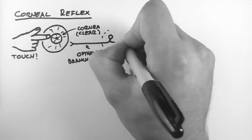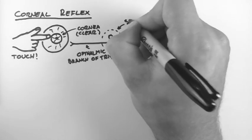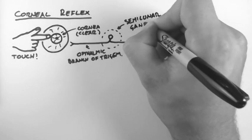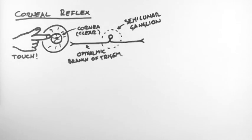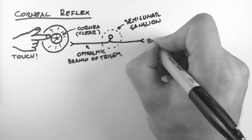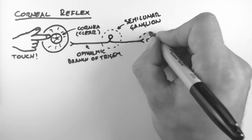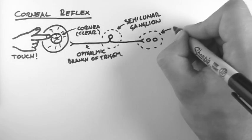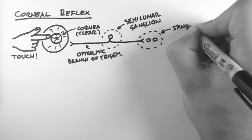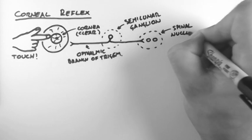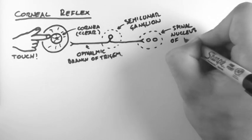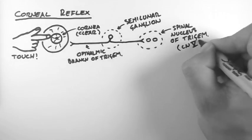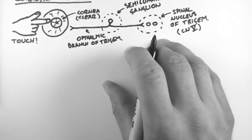Now the cell body for these nerves is in the semilunar ganglion. This is a ganglia, so it's outside the CNS. And these nerves then project into the brainstem to the spinal nucleus of the trigeminal nerve. And this is one of the nuclei of the fifth cranial nerve, which is the trigeminal nerve.